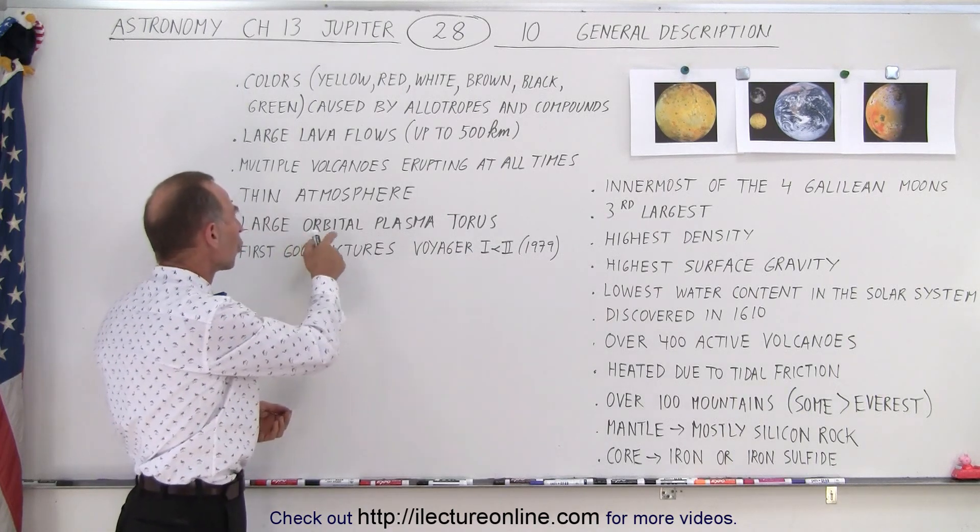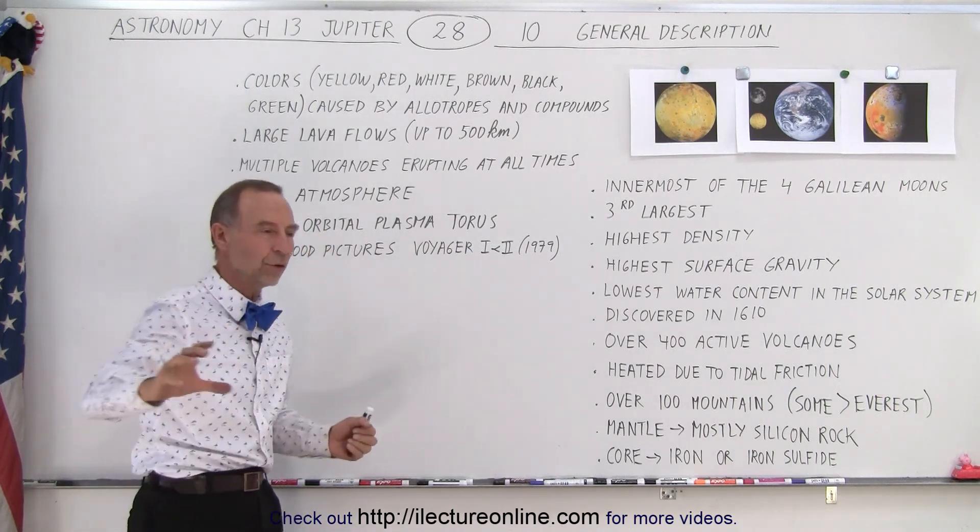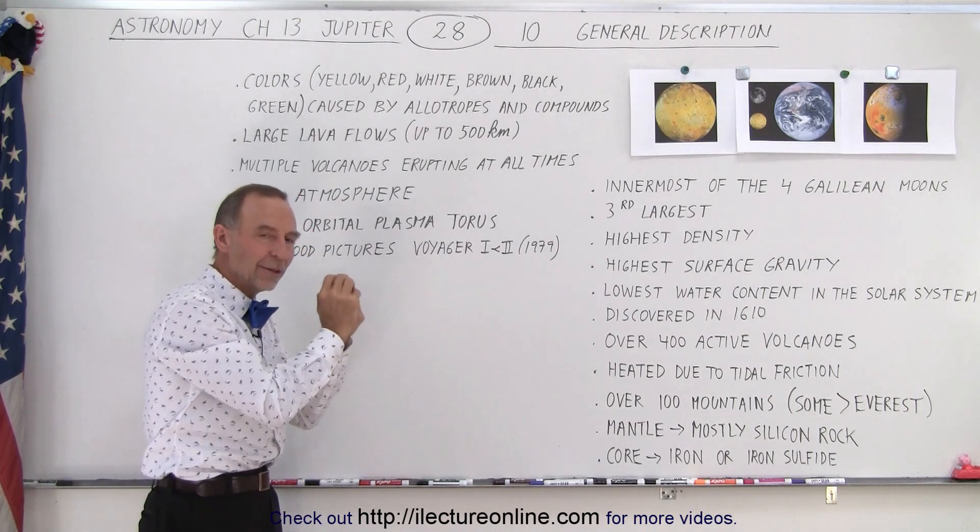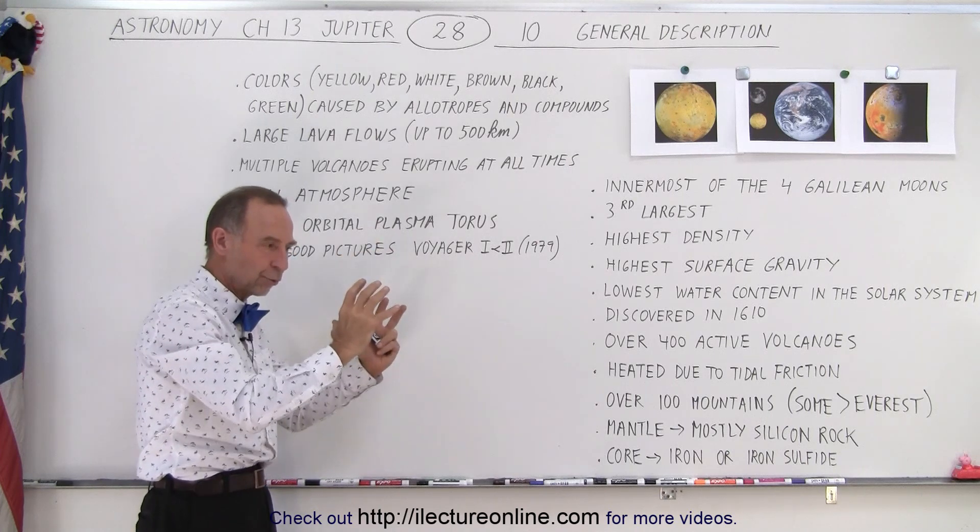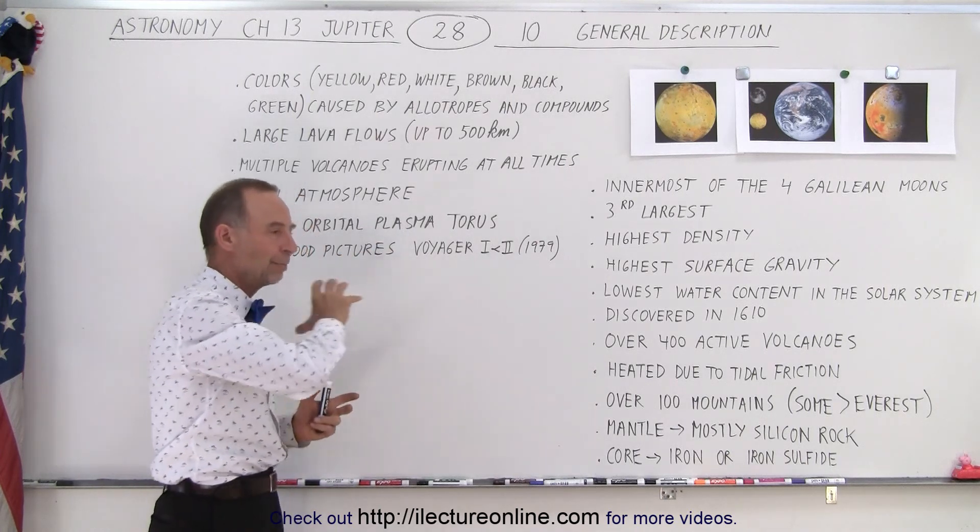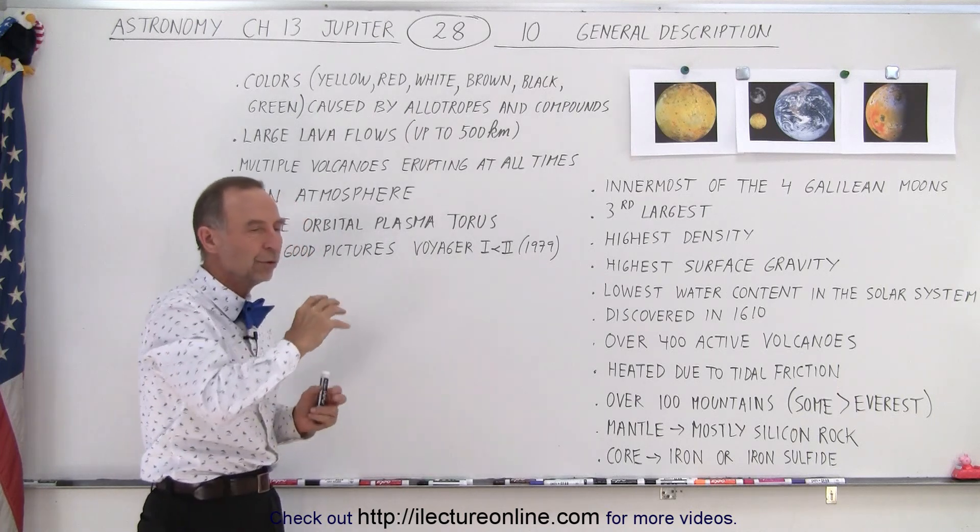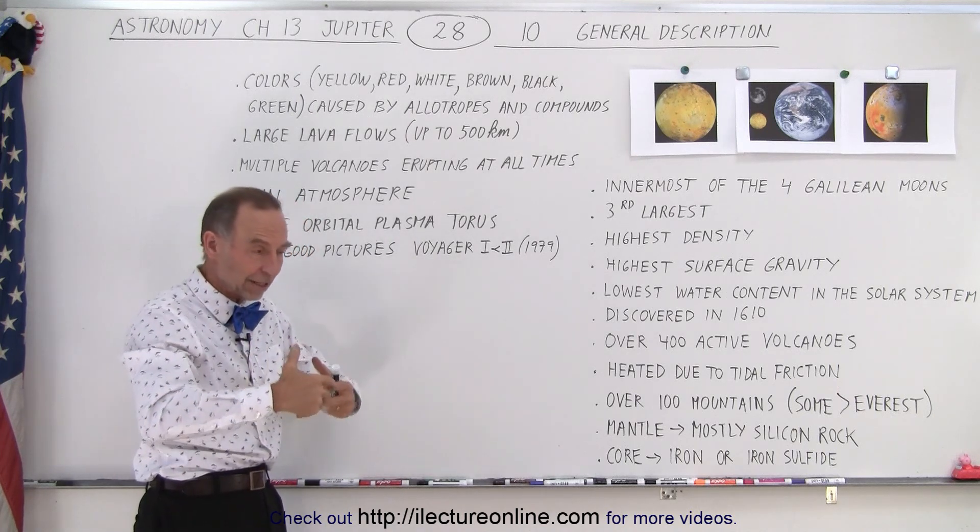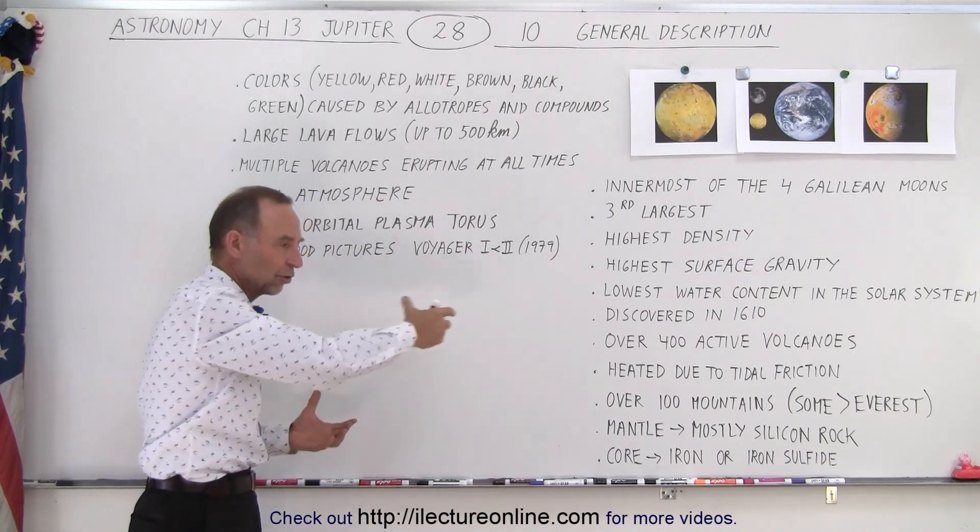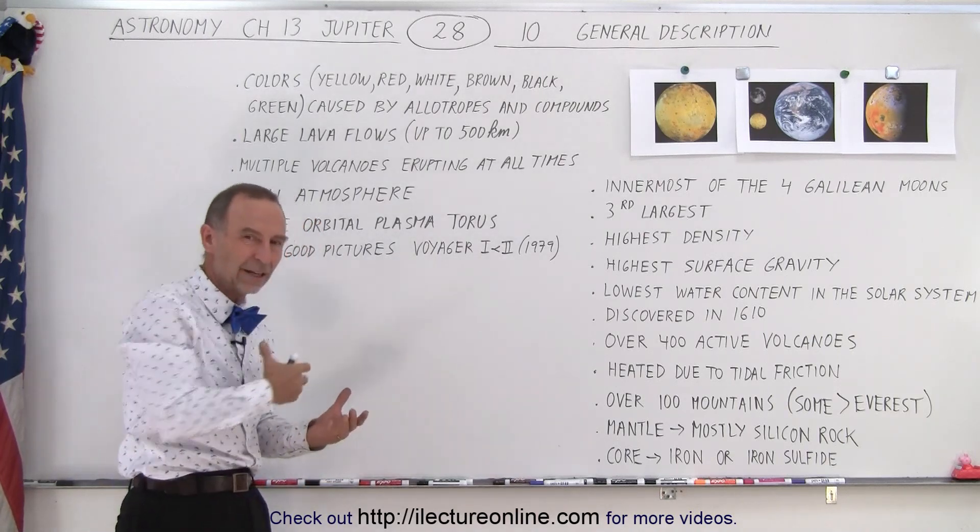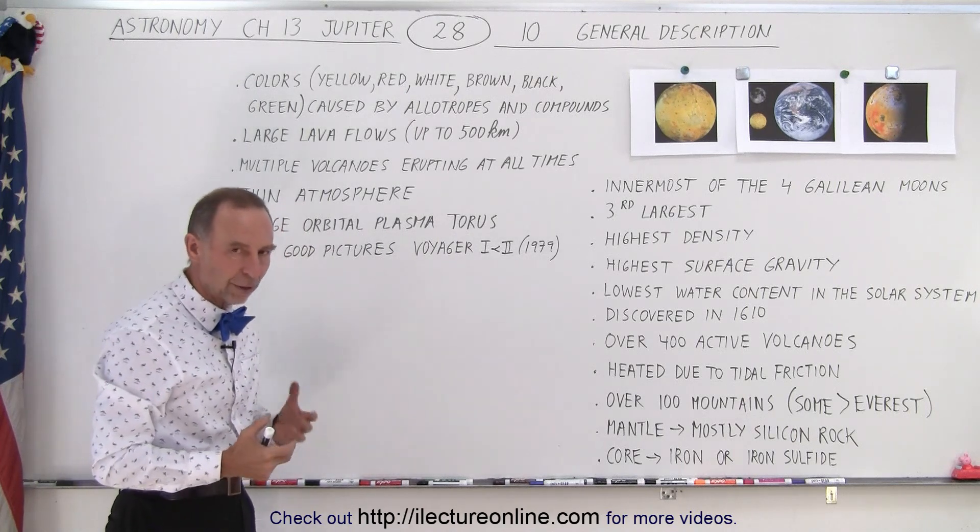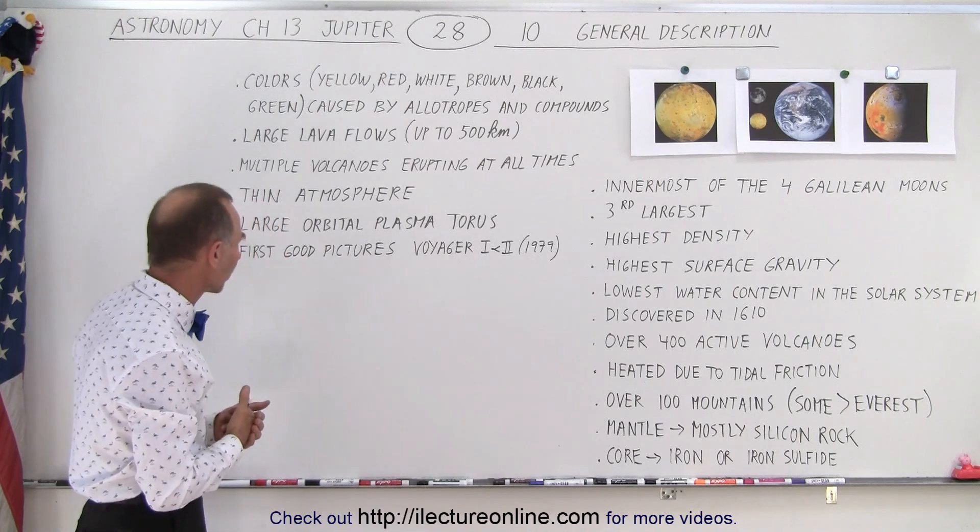We have a large orbital plasma torus that goes all the way around Jupiter where Io orbits. Io is in the middle of that torus. It's a very large ring of charged and uncharged particles that are ripped off the surface of the moon due to the volcanic activity. They're present and then the various forces rip them off. But they cause this large torus to exist around Jupiter. And of course Io then slams into those particles and has a lot of interaction with them.